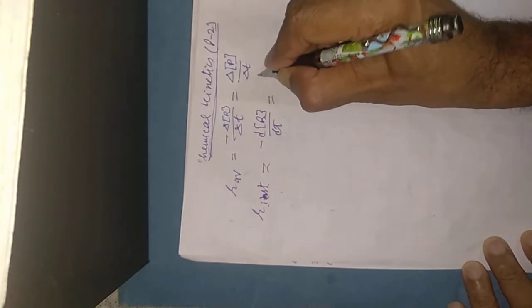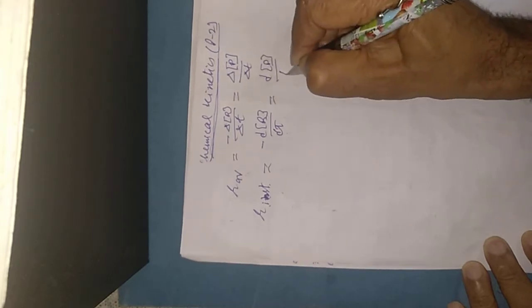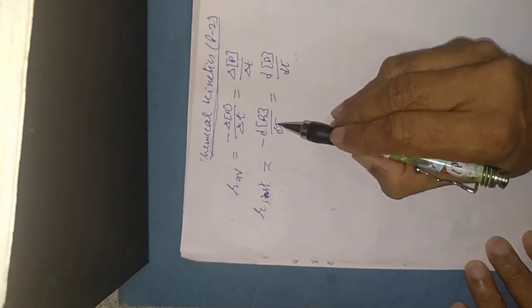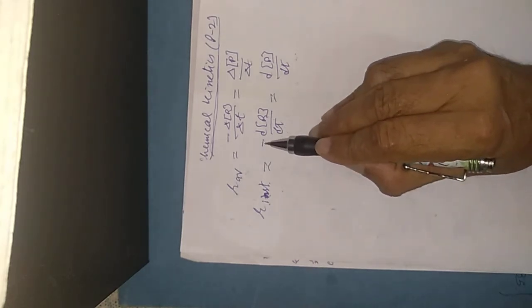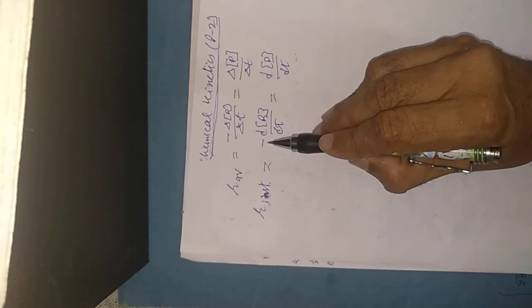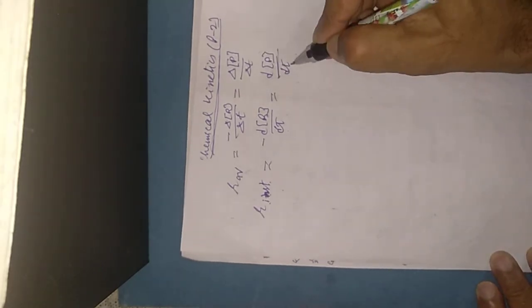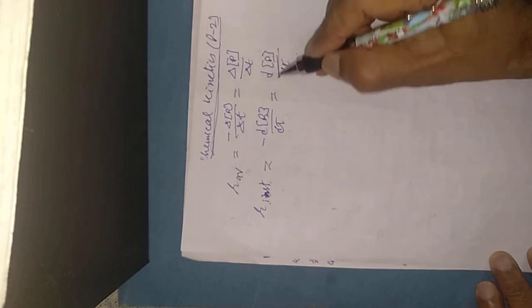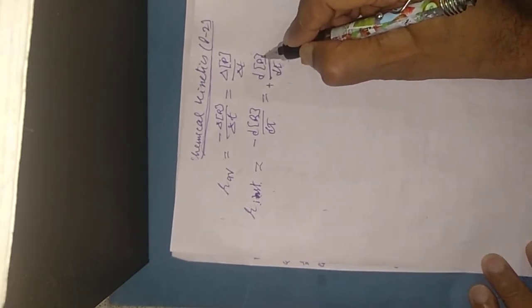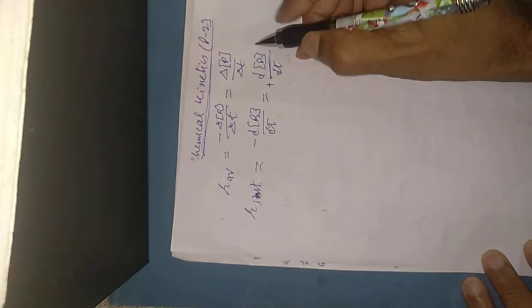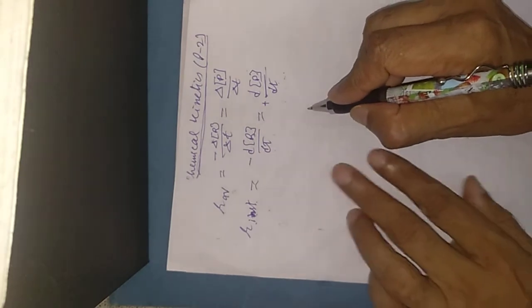This can also be written as DP upon DT. This is the instantaneous rate with respect to concentration. It is written with a minus sign because concentration is decreasing for reactants. For products, concentration is increasing.